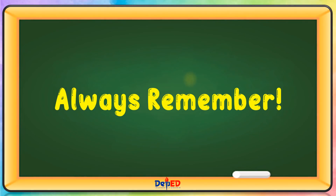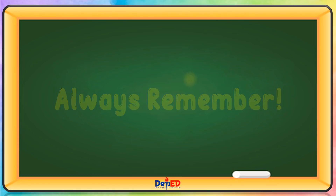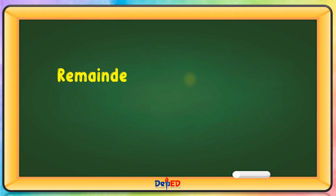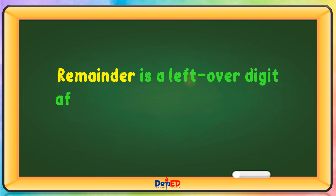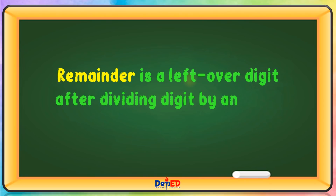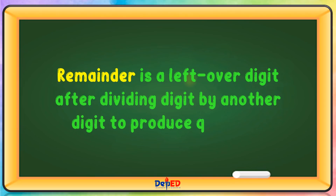Always remember: a remainder is a leftover digit after dividing one number by another to produce a quotient.